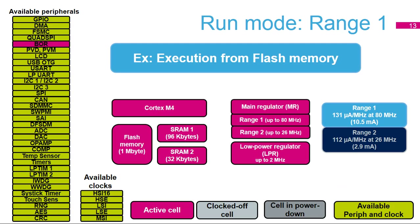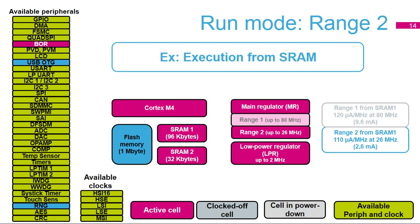In run mode, voltage scaling range 1 is the high-performance range, allowing a system clock up to 80 MHz. All peripherals and all clocks can be enabled. The run mode range 1 consumption is 131 microamps per MHz at 80 MHz from flash memory with the ART accelerator enabled. In run mode, voltage scaling range 2 is the medium-performance range, allowing a system clock up to 26 MHz. When executing from SRAM, the flash consumption can be saved by configuring flash in power-down mode and gating its clock off. All peripherals can be activated except the USB OTG and random number generator. The run mode range 2 consumption is 110 microamps per MHz at 26 MHz from SRAM.